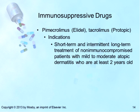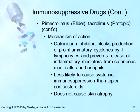Moving on to immunosuppressive drugs — Elidel and Protopic are used for short-term and intermittent long-term treatment of mild to moderate atopic dermatitis in non-immunocompromised patients who are at least two years of age. These are calcineurin inhibitors; they block the production of pro-inflammatory cytokines by T lymphocytes and prevent release of inflammatory mediators from cutaneous mast cells and basophils. They are less likely than topical corticosteroids to cause systemic immunosuppression and do not cause skin atrophy.